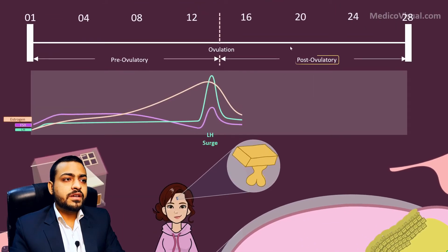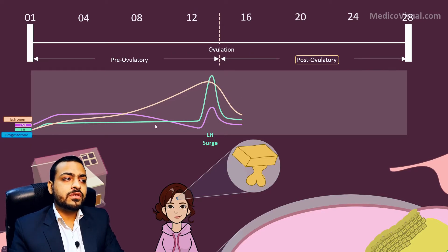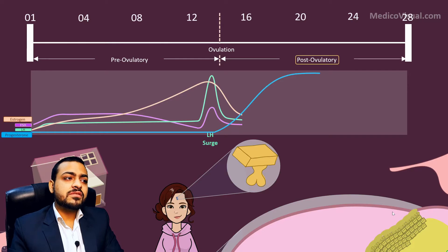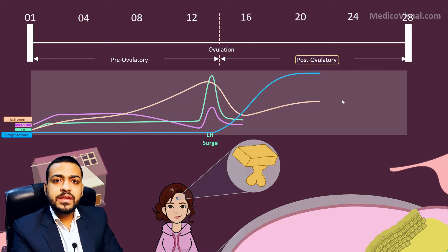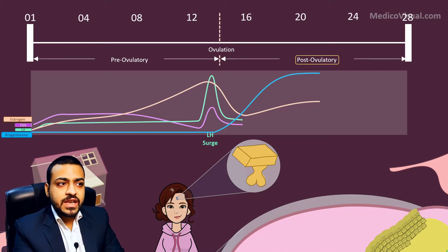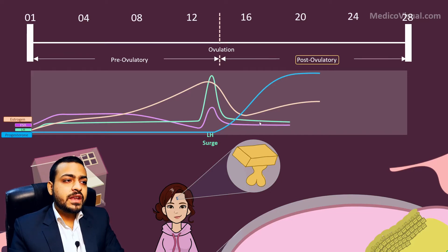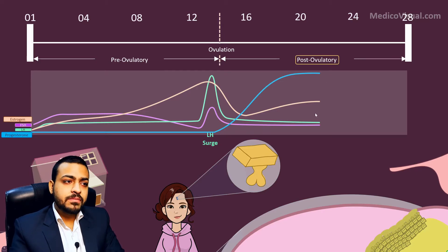This post-ovulatory phase is orchestrated mainly by progesterone hormone. The level of progesterone rises in the blood because the corpus luteum is releasing lots of progesterone. It is also secreting some estrogen, but in a much lesser quantity than progesterone. FSH and LH are not much needed during this phase, so they remain at a baseline level.